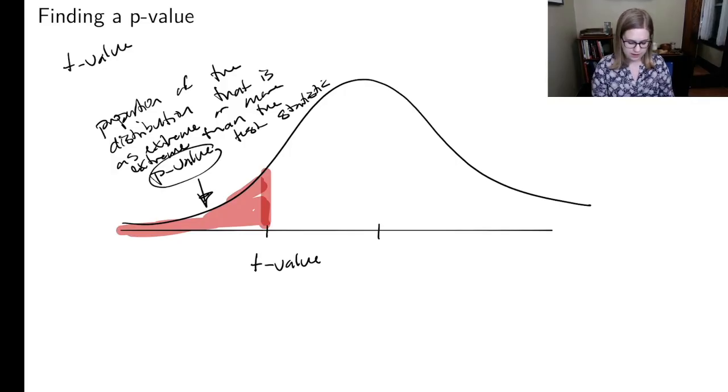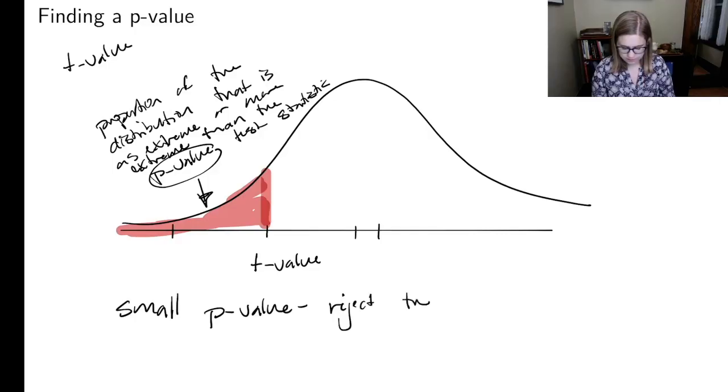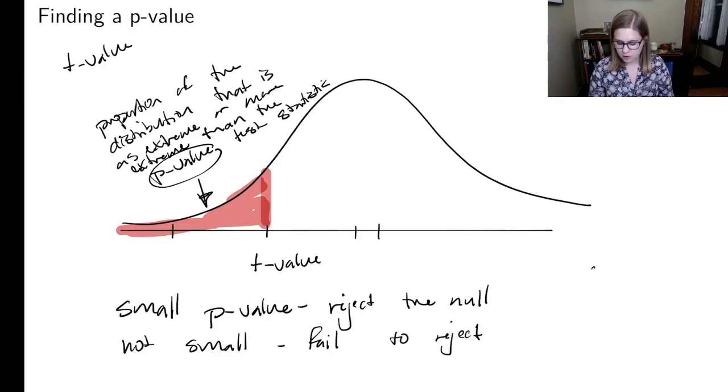So if I had an extreme t value, then I'd get a small p value. If I had a not very extreme t value, then I'd get a big p value. Small p value, we reject the null. And not small, we fail to reject. What's small? We often set our alpha level at 0.05. R is actually going to give us stars to show how significant something is. Is it significant at the 0.05 level, the 0.01 level, the 0.001 level, etc.